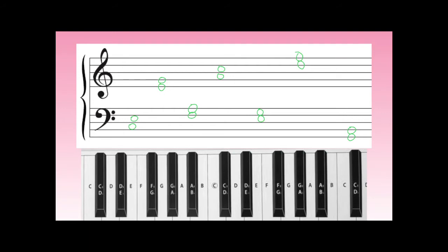The first interval on the staff goes from a C to an E — it's some kind of third. Let's count the half-steps: C, one, two, three, four half-steps above is an E. Because this is four half-steps, this is a major third.